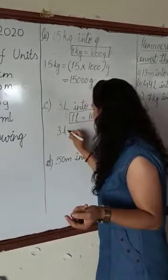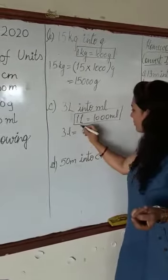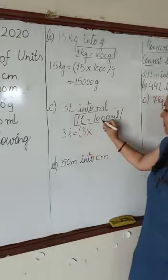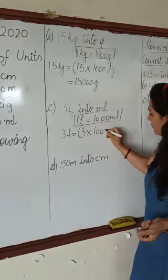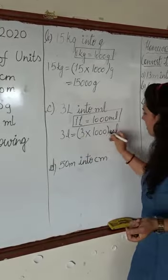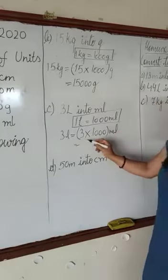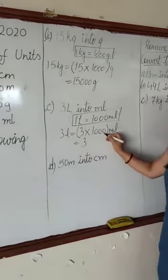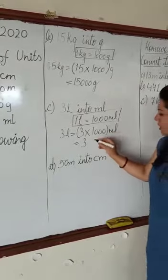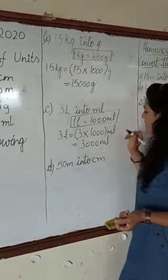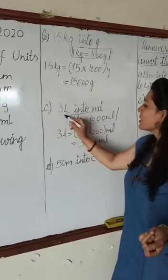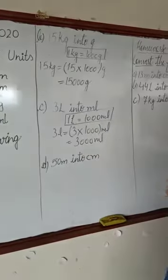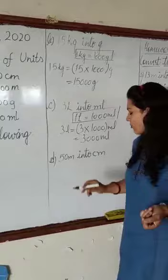Then we will convert 3 liters. Instead of liters, we will write 1000 milliliters. Now we can multiply: 3 ones are 3, and we will put 3 zeros—1, 2, 3. So 3 liters equals 3000 milliliters. Let's take one more question.